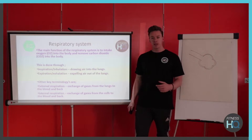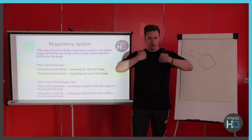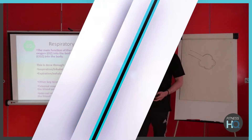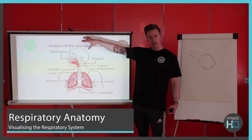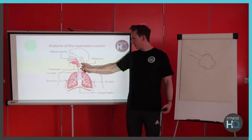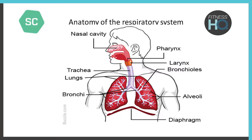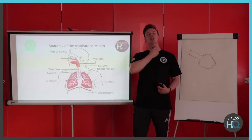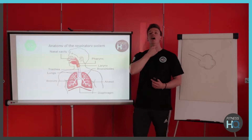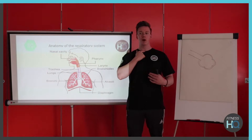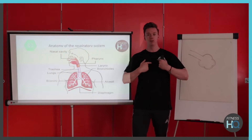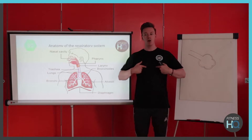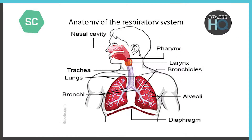Looking at the passage of air, we'll cover where it starts and the process of getting into the lungs. From the diagram, the anatomy of the respiratory system starts at the nose and mouth. It passes through the pharynx at the back of the mouth and top of the throat, down to the larynx in the neck region, then into the trachea — commonly known as the windpipe. The trachea branches off to reach both lungs, and those two branches are called bronchi, with the singular being bronchus.